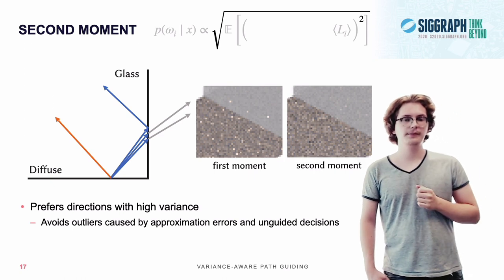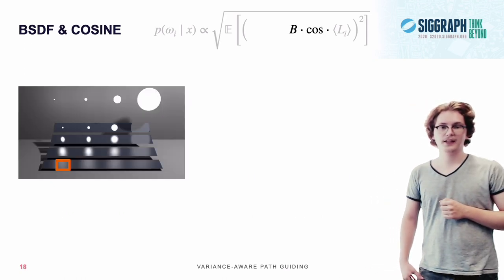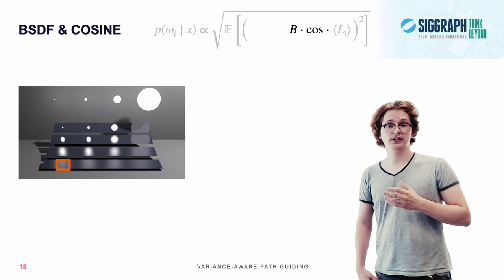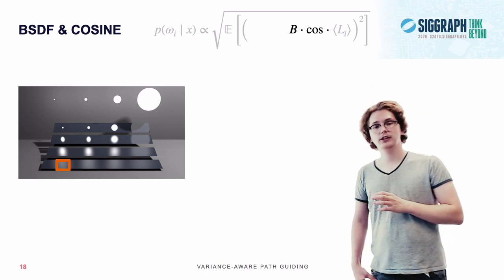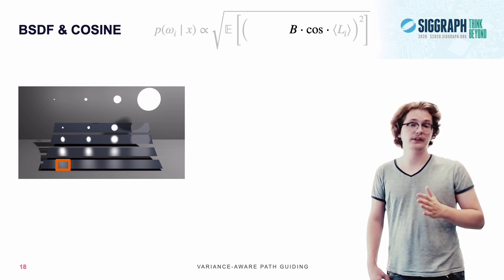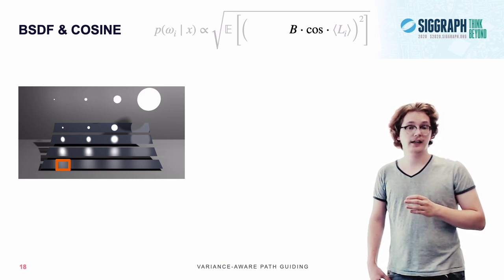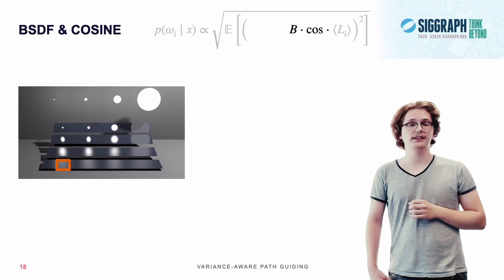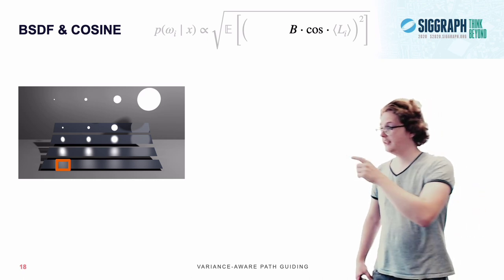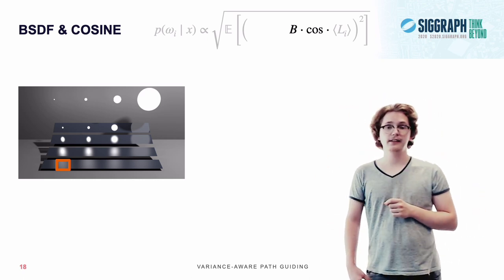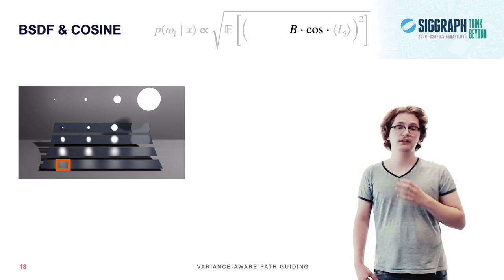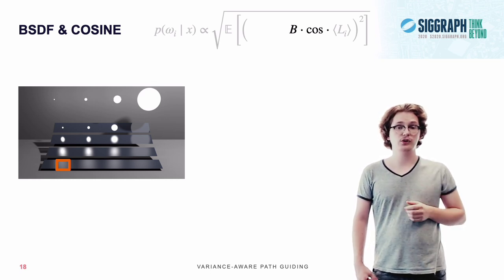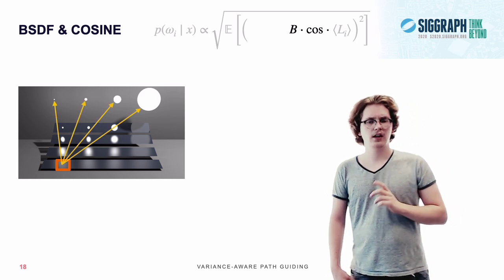Next up is the BSDF and cosine. To understand why this is important, consider the Veach MIS scene depicted here. Now this scene consists of many glossy materials of varying roughness, which are illuminated by these four light sources here. Now, for the spot that we've marked down here, guiding would see that all of these light sources emit light towards that point, so it will also try to sample all of these light sources.